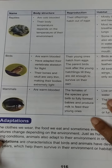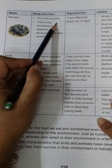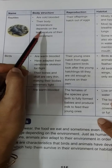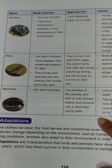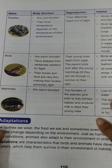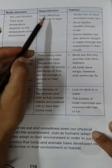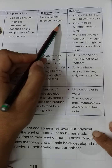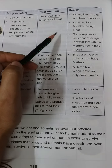Next are reptiles, which are also cold-blooded animals. Their body temperature depends on the temperature of the environment — that is why they are called cold-blooded animals. Their offspring hatch out of eggs.